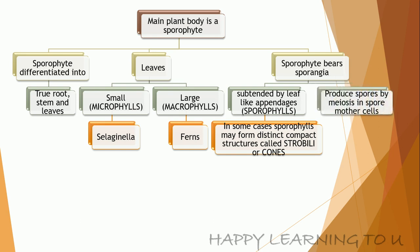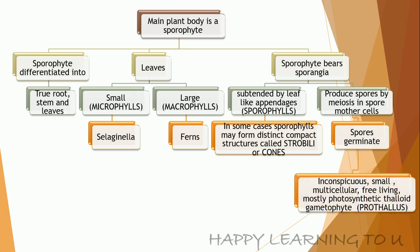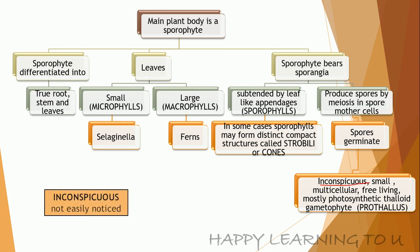The sporangia produces spores by means of meiosis in the spore mother cells, which then germinate to produce inconspicuous, small, multicellular, free-living, and mostly photosynthetic thaloid gametophyte, which is known as prothallus. Inconspicuous basically means something which is not easily noticed.